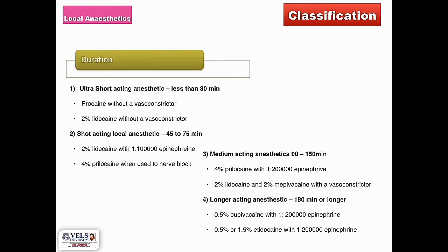Based on the duration of action, they can be categorized into ultra-short acting, short acting, medium acting, and long acting local anesthetics. Ultra-short acting agents act for less than 30 minutes; short acting for 45 to 75 minutes; medium acting for 90 to 150 minutes; and long acting for 180 minutes or more. Examples are shown in the slide.